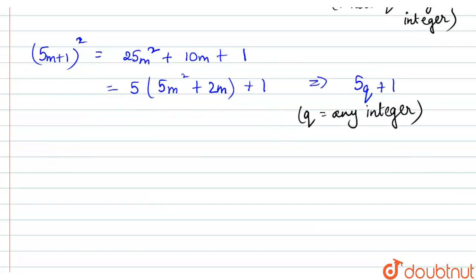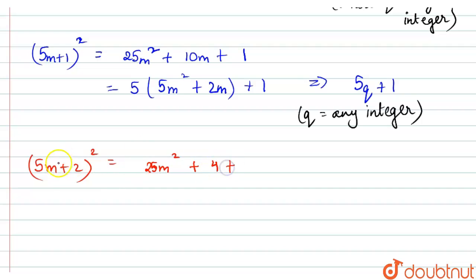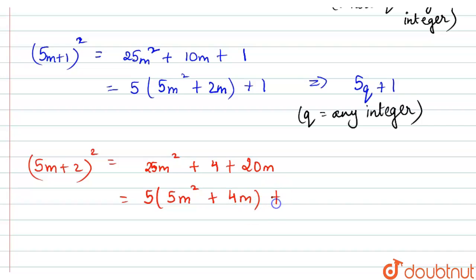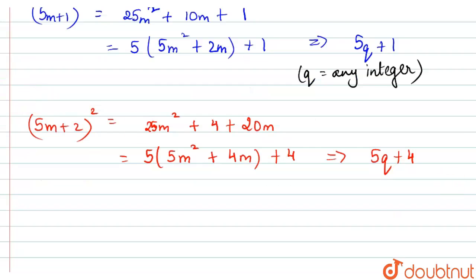If we take (5m plus 2)², we get 25m² plus 20m plus 4. Taking 5 common, we can write 5(5m² plus 4m) plus 4. This can be written in the form 5q plus 4, where q is any integer.